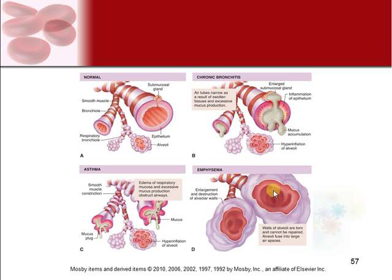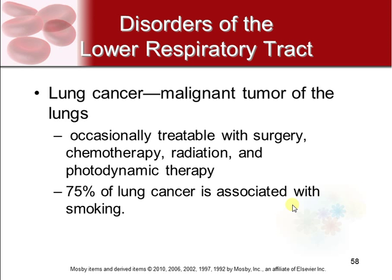Finally, emphysema over-inflates the alveoli to the point where they basically can't recoil and get smaller again — they're just permanently over-inflated. Lung cancer is a malignant tumor of lung tissue, occasionally treatable with surgery, chemotherapy, or radiation. Most lung cancer is associated with smoking, which is why cigarettes carry a black label warning. Lung cancer can metastasize to other places, and how treatable it is really depends on which stage it's caught. That brings us to the end of this respiratory section.